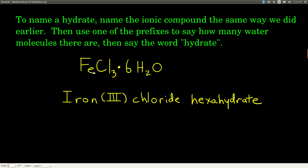To name this compound: this is iron and this is chloride. Because iron is not on the list of metals that only have one charge, we have to use the Roman numeral. There are three chloride ions, each with a negative one charge, so the iron ion must have a positive three charge to balance. This ion is called iron three, then chloride — so the ionic compound part is iron three chloride. Then we say hexa for six and hydrate. Done — easy as that.